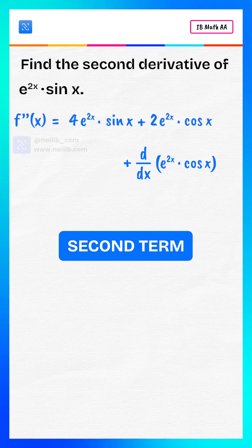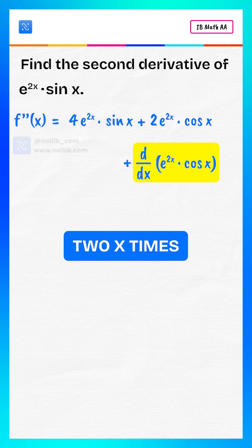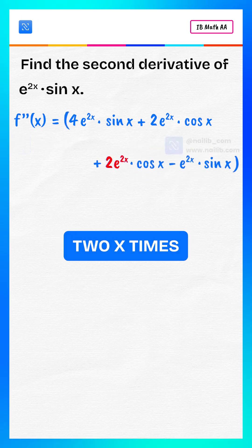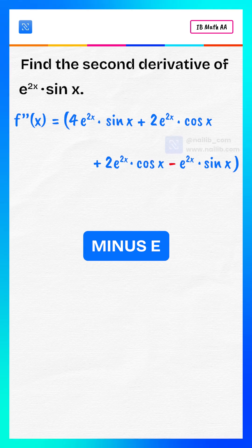Now the second term. The derivative of e to the power 2x times cosine x is 2 times e to the power 2x times cosine x minus e to the power 2x times sine x.